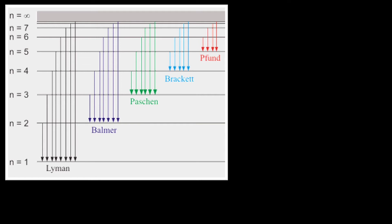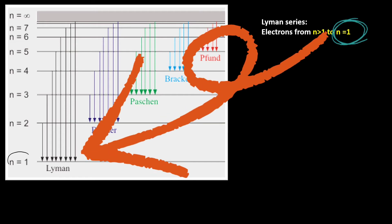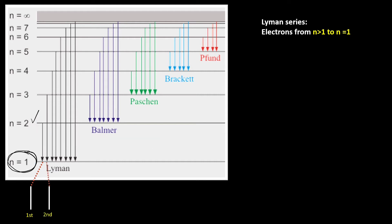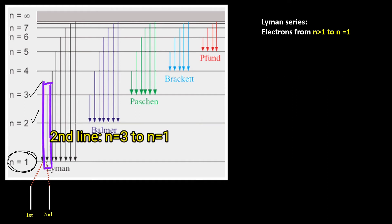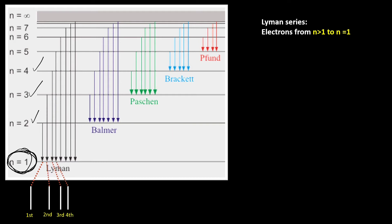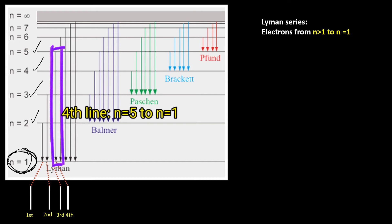For Lyman series, electrons at higher energy levels must fall to lower energy level n equals to 1. To form the first line in the Lyman series, electrons must fall from n equals to 2 to n equals to 1. To form the second line, electrons must fall from n equals to 3 to n equals to 1. To form the third line, electrons at n equals to 4 must fall to n equals to 1. To form the fourth line, electrons must fall from n equals to 5 to n equals to 1.